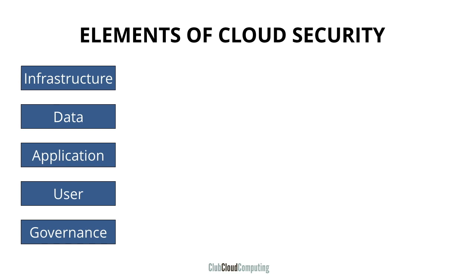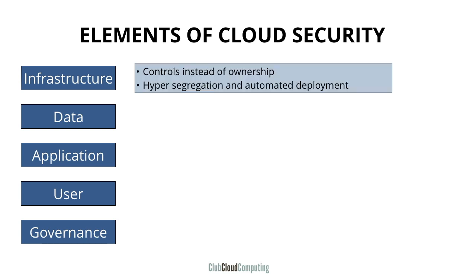So let's have a look at how cloud addresses each of these elements of cloud security. Let's get back to infrastructure security. Now we outsource a lot of infrastructure to infrastructure-as-a-service providers, and that means we have to rely more on controls than on ownership as a way to apply security. We want somebody else to do the right thing instead of just relying on the fact that it is on our premises. Because of the automation inherent in infrastructure as a service, we have a lot of opportunity for hypersegregation and automated deployment, which each in their own way can bring potentially tremendous security benefits.